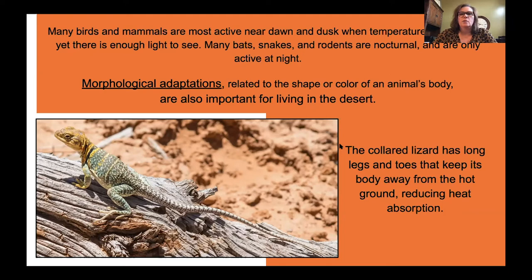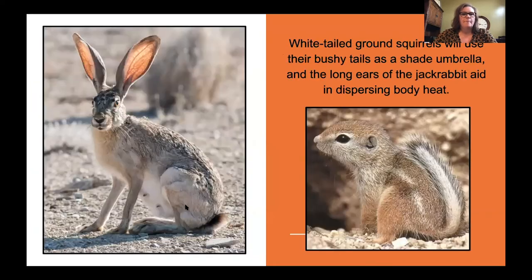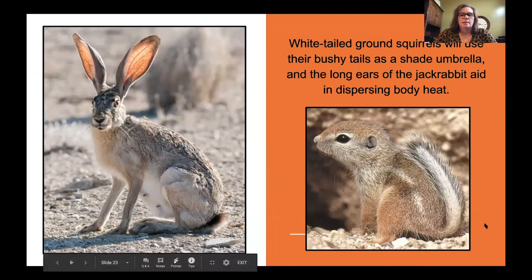Morphological adaptations — related to the shape or color of an animal's body — are also important for living in a desert. Some lizards have long legs and toes that keep their body away from the hot ground, reducing heat absorption. White-tailed ground squirrels will use their bushy tails as a shade umbrella, and the long ears of a jackrabbit aid in dispersing body heat.